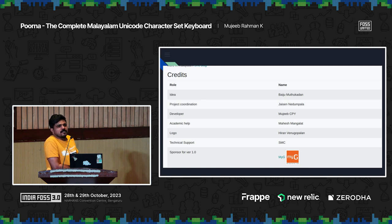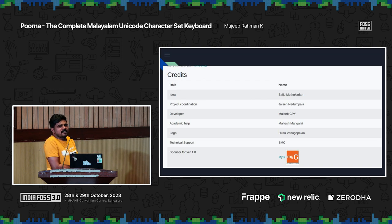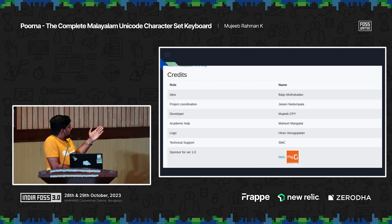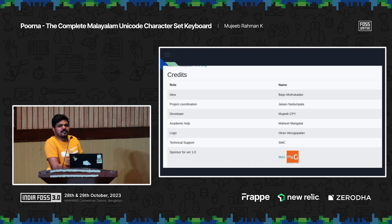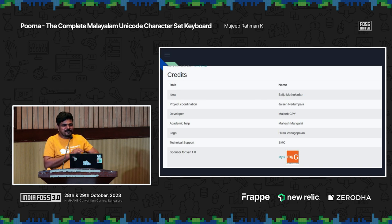The idea was by Hussain with the garden, who is a founding member of SMC. Jason just came now — he is the project coordinator. He arranged all the things and even found a sponsor for the first version, which sponsored the first version of the Poorna keyboard. The developer is me. Academic help was from Mahesh Mangalat. The logo was also created by someone. It was a SMC project — SMC, you know, Swathanthra Malayalam Computing. There are some stickers with Subin — you can collect from there. Thank you. If you have any questions.